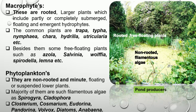Phytoplanktons are the non-rooted floating minute plant or algae. Examples of phytoplanktons include Spirogyra, Cladophora, Closterium, Cosmarium, Eudorina, Pandorina, Volvox, Diatoms and Anabaena.